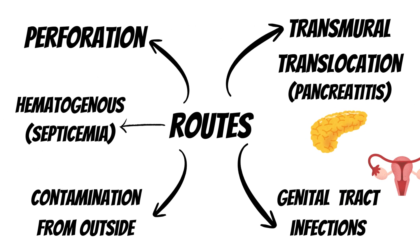The routes by which bacteria reach the peritoneum include perforation. When an ulcer perforates, there is spillage of contents into the peritoneal cavity, bringing bacteria along with the bowel contents, which are rich in bacteria.